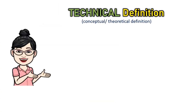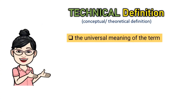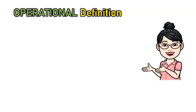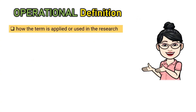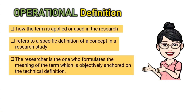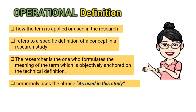Technical definition, sometimes called conceptual or theoretical definition, refers to the universal meaning of the term. It is a definition that comes from different reference materials such as dictionaries, encyclopedias, books, journals, and even websites. On the other hand, operational definition is how the term is applied or used in the research — it refers to a specific definition of a concept in a research study. For operational definition, it is the researcher who formulates the meaning of the term, which is objectively anchored on the technical definition. Usually, researchers use the phrase 'as used in the study' when introducing an operational definition.